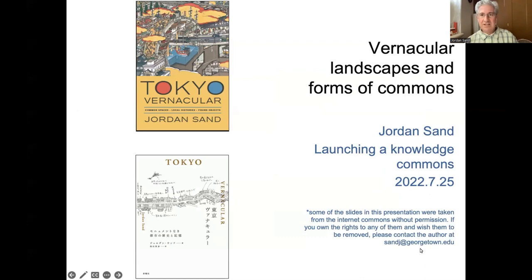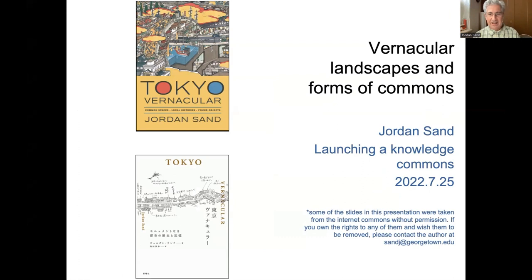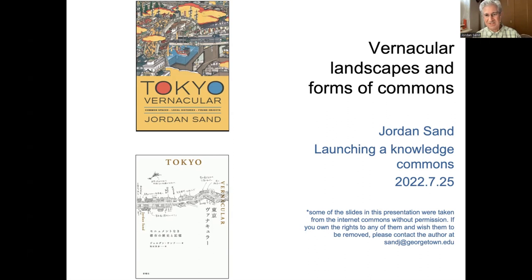I've titled this 'Vernacular Landscapes and Forms of Commons.' Tokyo Vernacular is the reason I've been invited today — it came out in English several years ago and I'm happy to report that a Japanese edition was published just last year as well. I want to introduce some of the arguments in Tokyo Vernacular today, and at the same time seek to make a little more explicit the politics in the separate chapters of this book and the politics in how we talk about commons. I'm going to do that by posing questions rather than giving you answers.